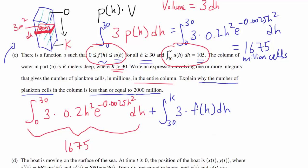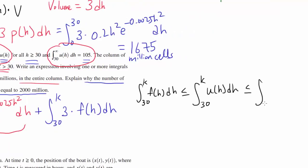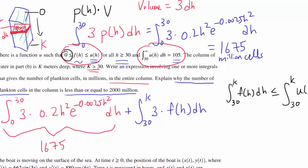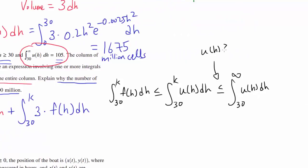Let's think about the integral from 30 to K of F(H)dH and see if we can get any inequality. We know U(H) ≥ F(H) for all H ≥ 30. That's telling us that this integral is less than or equal to the integral from 30 to K of U(H)dH. But we have integral from 30 to infinity. We know this thing has to be less than or equal to integral from 30 to infinity of U(H)dH because U(H) is non-negative, greater than or equal to 0. As you're going from K to infinity, you're not going to subtract the values from this initial value.